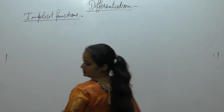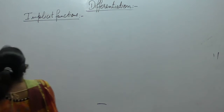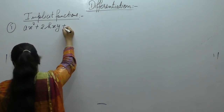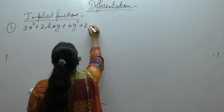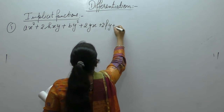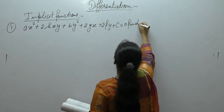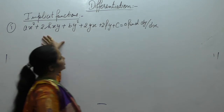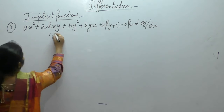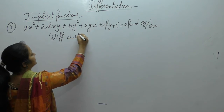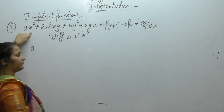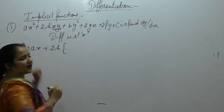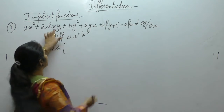Question number one: if ax² + 2hxy + by² + 2gx + 2fy + c = 0, find dy/dx. This is the given implicit function. Differentiate this function with respect to x. 'a' is constant, derivative of x² is 2x. 2h is constant; for the xy term we will apply the u·v product rule — first function as it is, derivative of second.